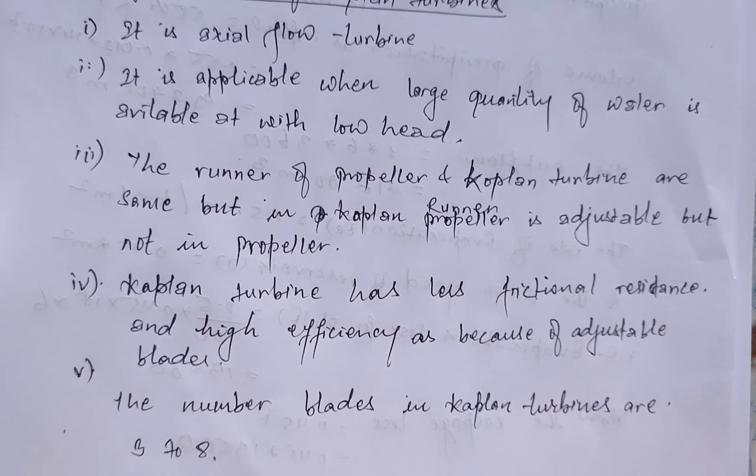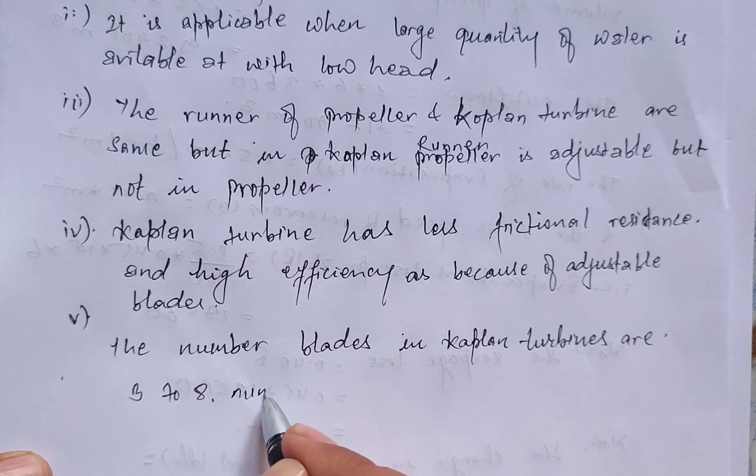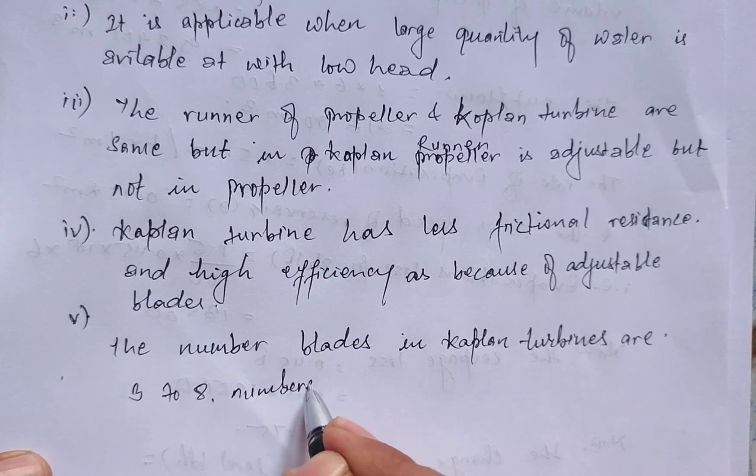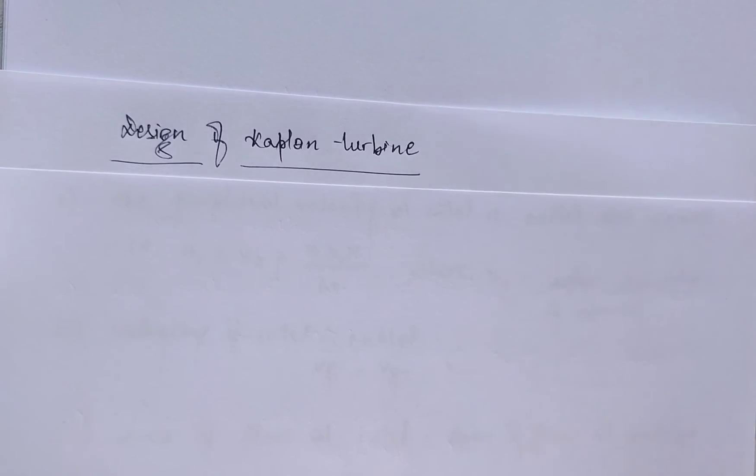The number of blades in Kaplan turbines are from three to eight.